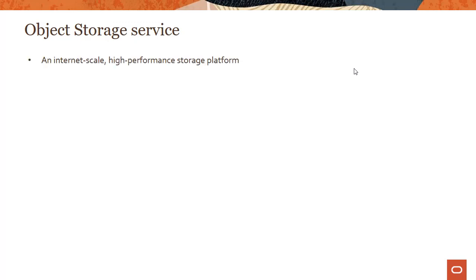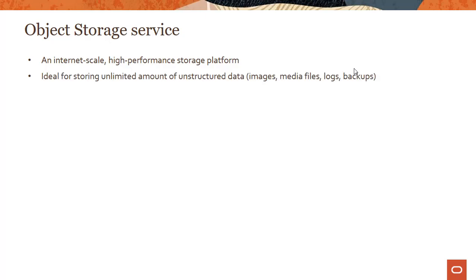So what is object storage? Let me recap some of the key characteristics. It's an internet-scale, high-performance storage platform where you manage data as objects. This is ideal for storing an unlimited amount of unstructured data, and there's a huge explosion of unstructured data nowadays — whether it's images, media files, logs, backups, etc.